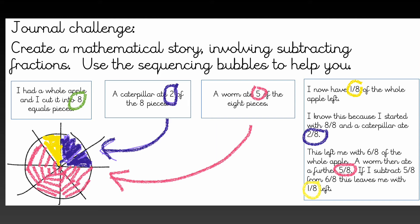I had a whole apple and cut it into 8 equal pieces. A caterpillar ate 2 of the 8 pieces. A worm ate 5 of the 8 pieces. Can you see I have used a diagram to help explain this.